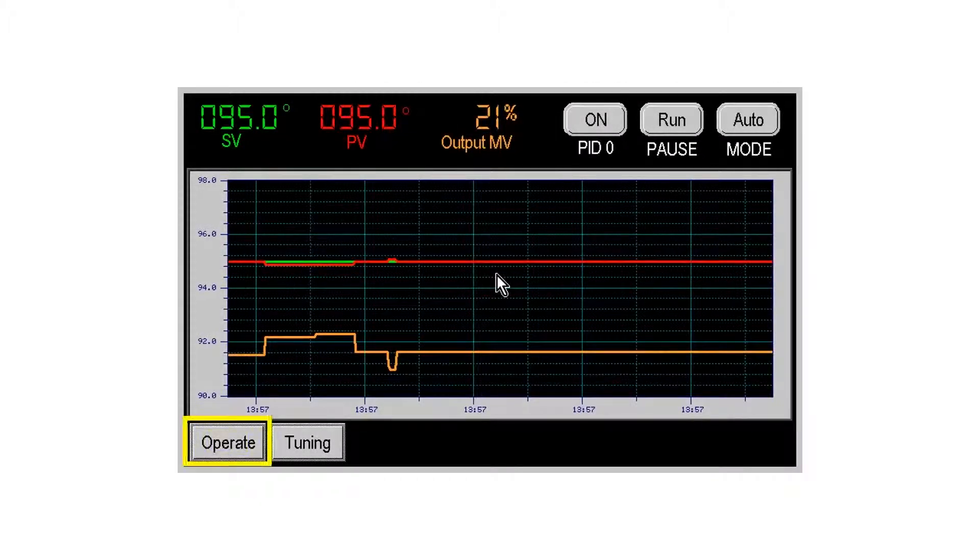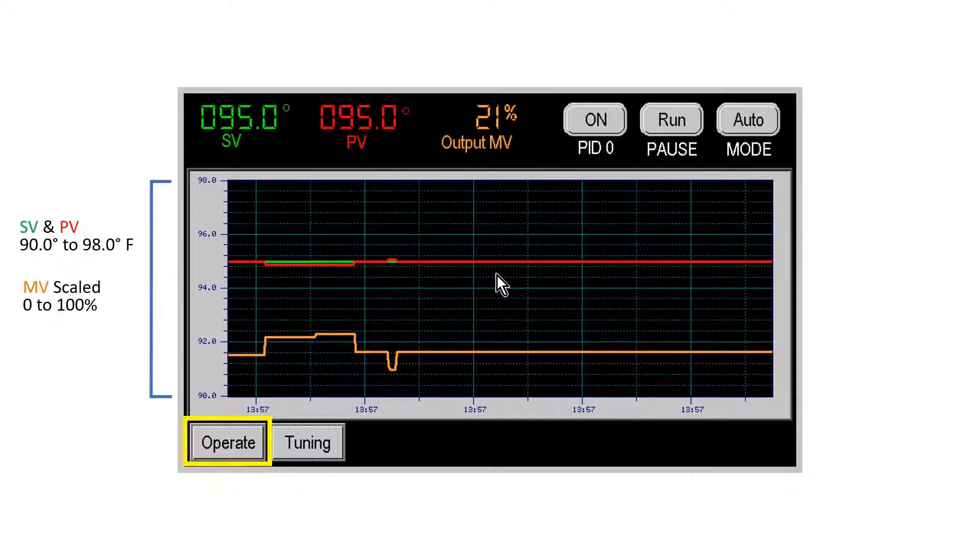The operations screen contains a trend graph ranged from 90 to 98 degrees Fahrenheit. The MV control output is shown on the graph and is scaled for 0 to 100%.